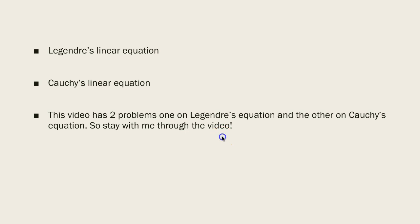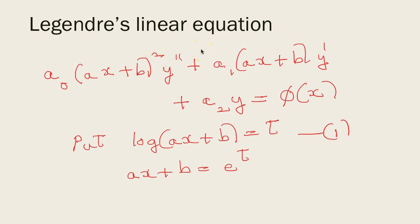By a Legendre's equation we mean an equation of the form: a₀ × (ax + b)² × y'' (second order derivative) + a₁(ax + b)y' + a₂y = φ(x). For solving a Legendre's equation we put log(ax + b) = t, or equivalently ax + b = e^t.